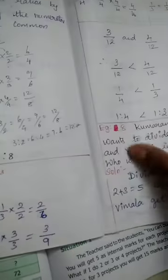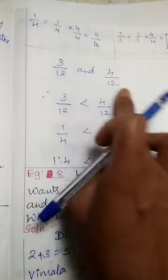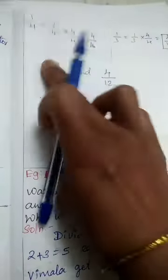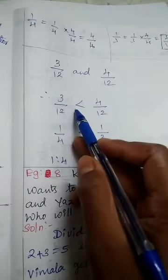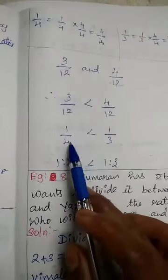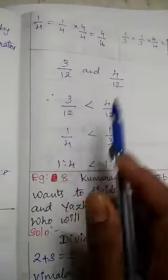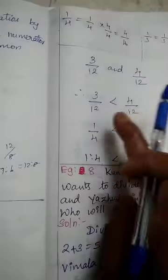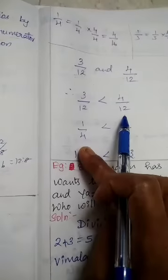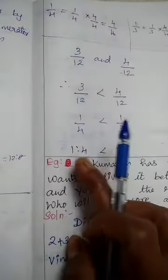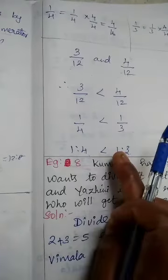Now find the same denominator. From 1/4 we get 3 by 12, and from 1/3 we get 4 by 12 — both have denominator 12. Compare the numerators: 4 is the greater number. So 4 by 12 is greater. Going back to the original ratios: 1 is to 4 is less than 1 is to 3. This is comparison of ratios.